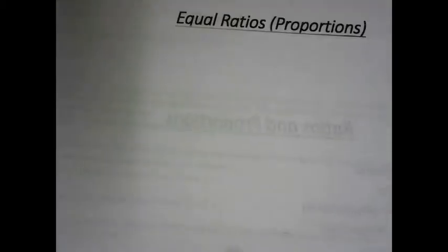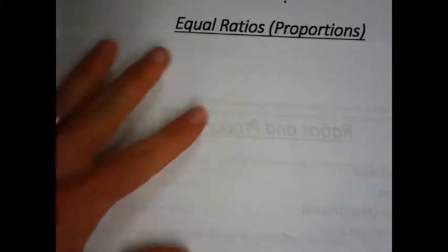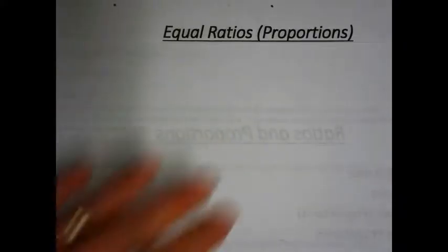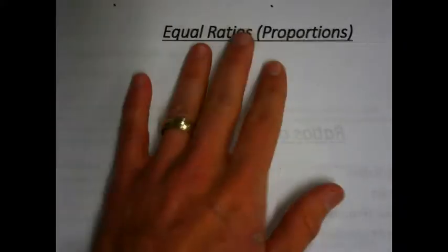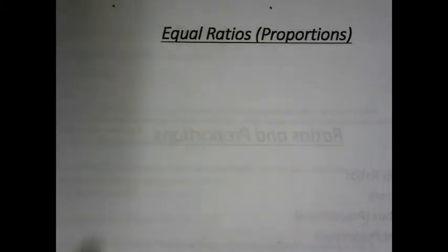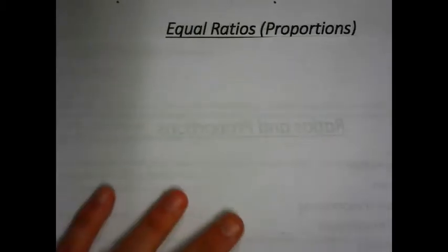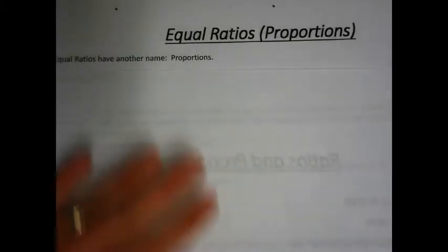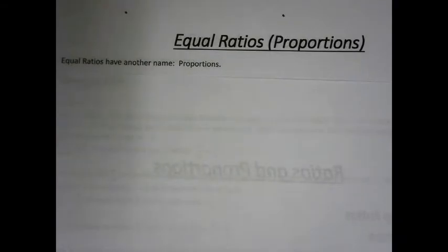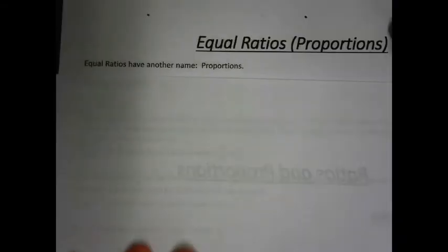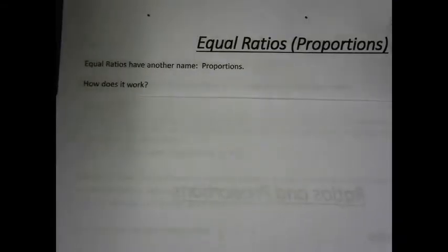We talked about ratios, and what we're going to do now is talk about equal ratios. Equal ratios are these things called proportions. So equal ratios have another name — they are called proportions. It's handy to know, good vocabulary.